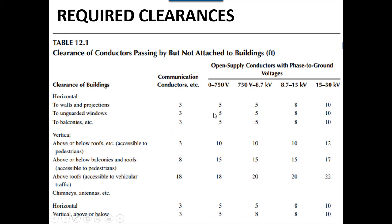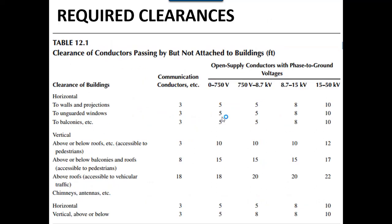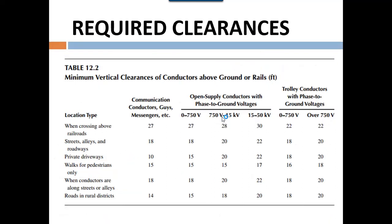There are tables showing horizontal and vertical clearance values in feet. For a voltage of 0 to 750 volts, the clearance to a wall or projection should be at least 5 feet, and for unguarded windows to balconies, values vary. Vertical clearance values change gradually according to requirements. For the minimum vertical clearance of the conductor above ground or rail at 0 to 750 volts, the required clearance is 27 feet.